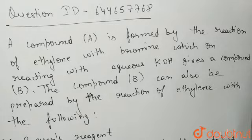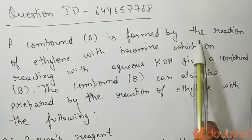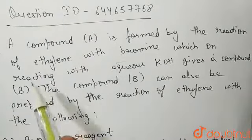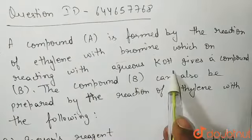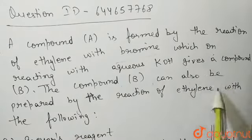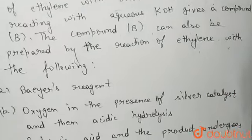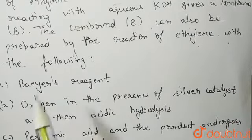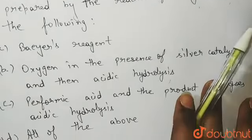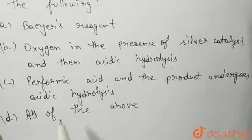Hello students. The question is: a compound A is formed by the reaction of ethylene with bromine, which on reacting with aqueous KOH gives a compound B. Compound B can also be prepared by the reaction of ethylene with which of the following? The four options are: first, Baeyer's reagent; second, oxygen in the presence of silver catalyst followed by acidic hydrolysis; third, performic acid followed by acidic hydrolysis; and D, all of the above.